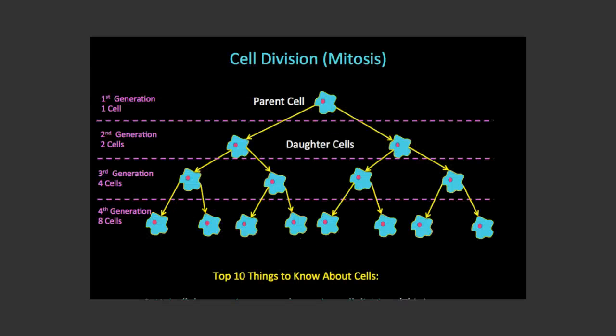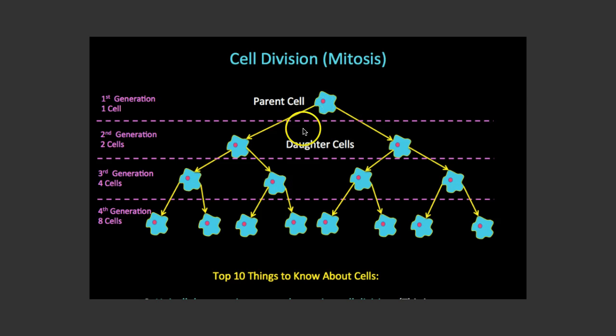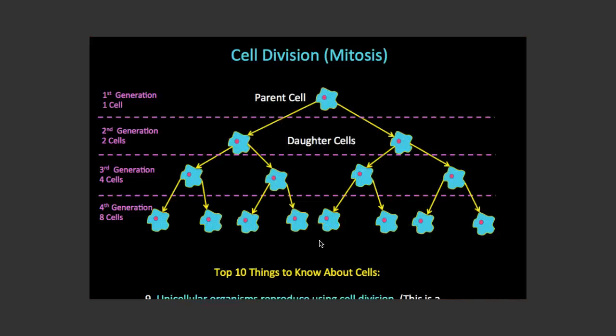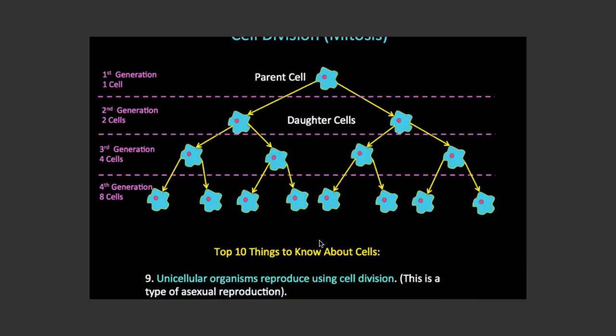The next thing to talk about is cell division. Here is a parent cell — it creates two identical daughter cells when we undergo cell division, and each generation produces double. So in the first generation we have one cell, it divides and we get two cells, then four cells, then eight cells. Here's a video of what cell division looks like. Cells divide into two, those two divide into four, then eight, and they keep multiplying by two. They are identical and they multiply by two each generation.